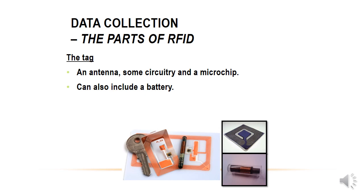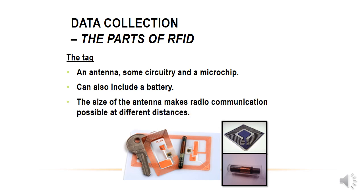It can include a battery, but there are many RFID tags that don't have batteries. The size of the antenna — whether it's bigger or more powerful — determines the distance over which radio communication is possible.